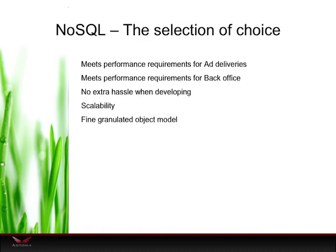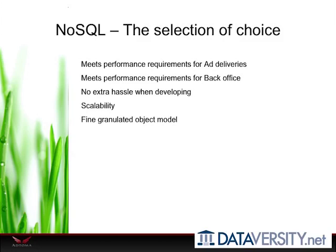In our previous lives we had all used traditional SQL databases, so we disregarded that solution and wanted to try to find a NoSQL or NewSQL solution. We were looking for a database that would support performance in ad deliveries and in back-office functionality with inventory and forecasting — with as little hassle as possible during development. We wanted to avoid database schemas entirely, and of course needed scalability and performance even when using finely granulated object models.